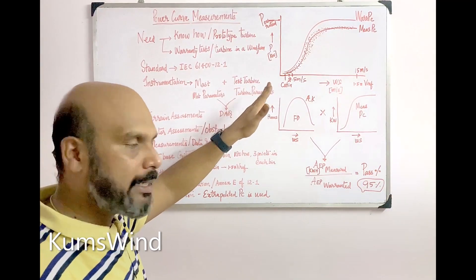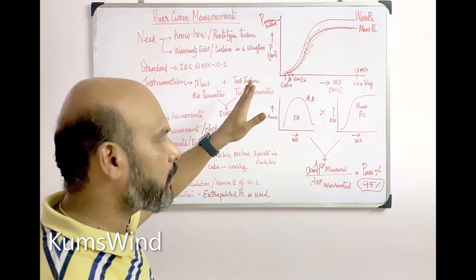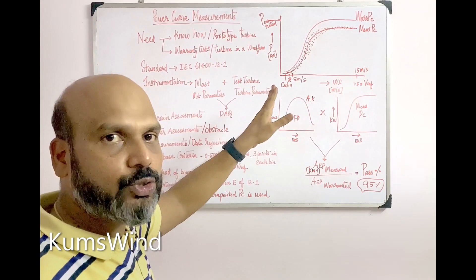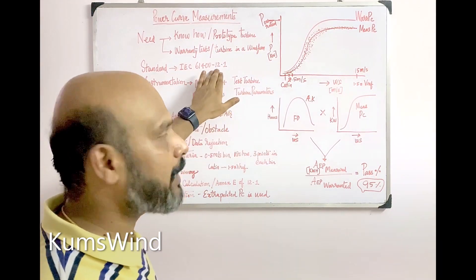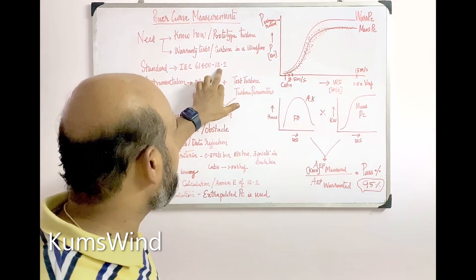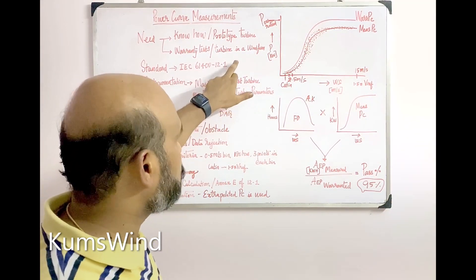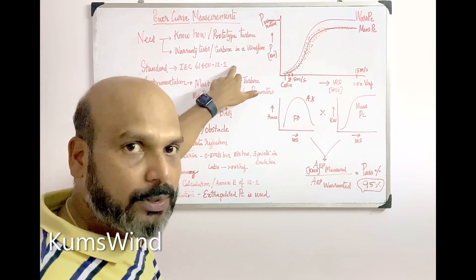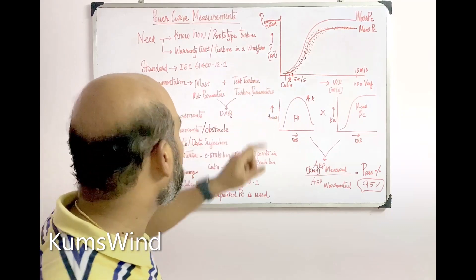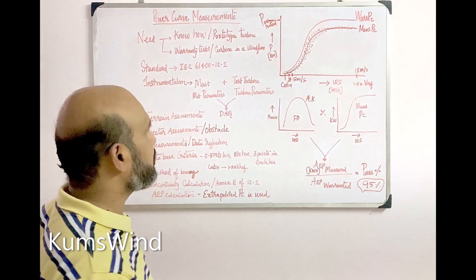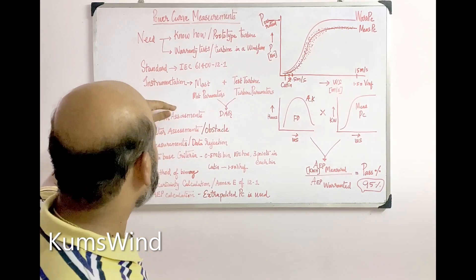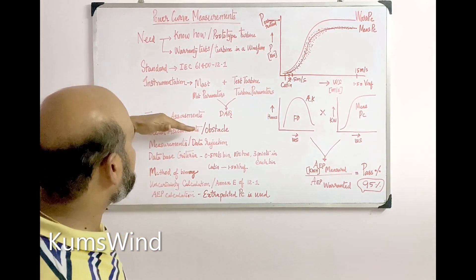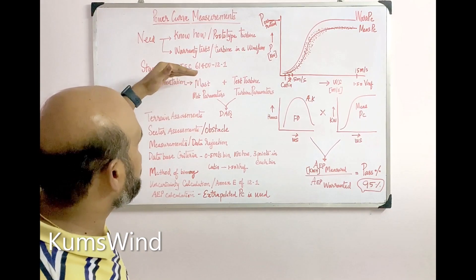IEC 12-1 clearly explains what kind of instruments are to be used, what accuracy classes are required, and what kind of calibration is to be done. The latest version of IEC 12-1 is Edition 2, which is the industry standard today.